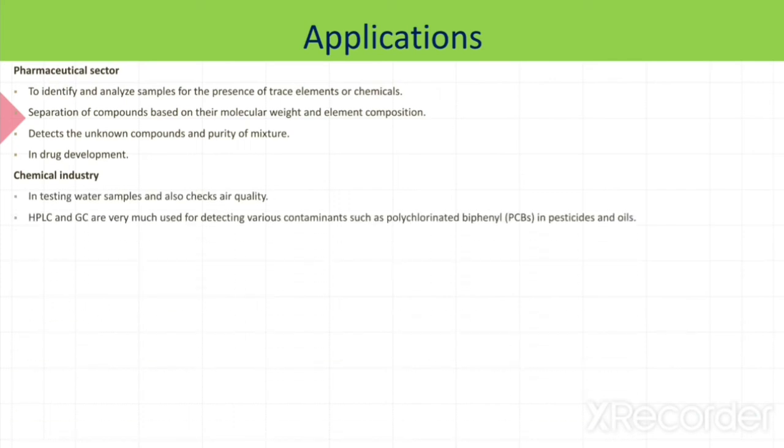Similarly it is used in the chemical industry, for example in water testing and to check their quality. HPLC and GC are mostly used in the chemical industry for different types of molecule identification, for example PCBs. It is used in life science applications and food industry to identify food spoilage and the molecule responsible for food spoilage, and to determine the nutritional quality of food.